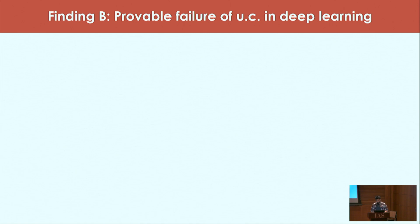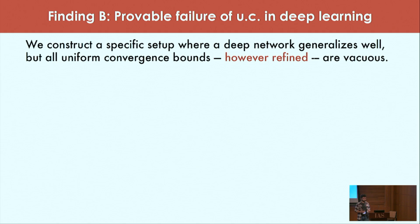That was our first finding. What is our second finding? We show that uniform convergence can provably fail to explain generalization in certain situations. We do this by constructing a specific setup where if you train a deep network, the network is going to generalize well, but at the same time any uniform convergence bound will boil down to a vacuous quantity. And I must highlight here that it is not just the naive uniform convergence bounds but also bounds that are refined by incorporating the algorithm and the data distribution into it.